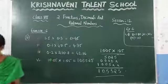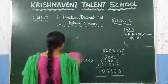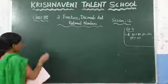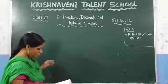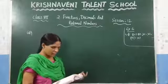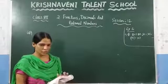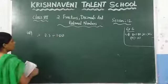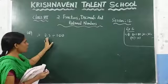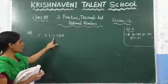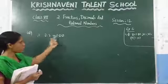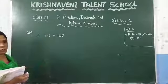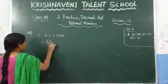Now see the 6th question: they have given a decimal number divided by some numbers. The first question is 2.3 divided by 100. In the case of multiplication we shifted the decimal point to the right; in the case of division you need to shift the decimal point to the left by as many zeros. You can also do normal calculation — write 2.3 as 23 by 10.